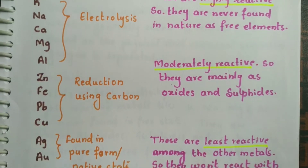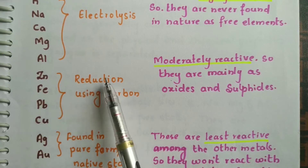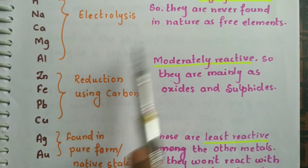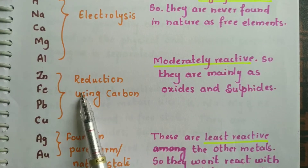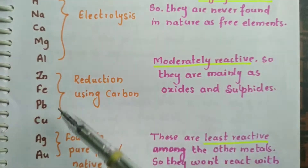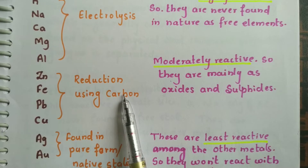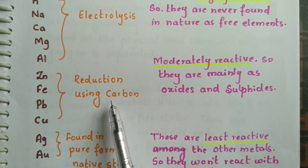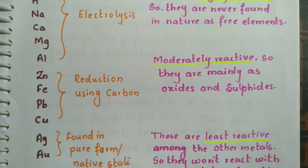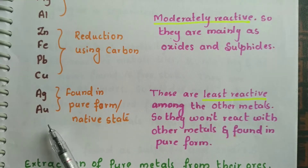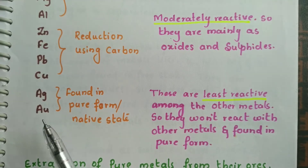For moderately reactive metals, we use reducing agents. We use carbon as a reducing agent — usually carbon monoxide or coke. As for silver, gold, and platinum, these are mostly found in their free state because they do not react with elements in the atmosphere like oxygen, nitrogen, or hydrogen.